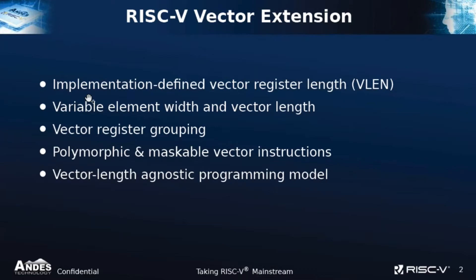The element width and the vector length itself can be configured at runtime. It's also possible to group multiple vector registers together to form an even larger vector, so you can have better performance. All vector instructions in the spec are polymorphic, so they can operate on data types of different widths. Almost all of these instructions can be maskable. Finally, there's a vector-length agnostic programming model, so you can run the program on all vector cores independently of the vector register length choice of the implementation.